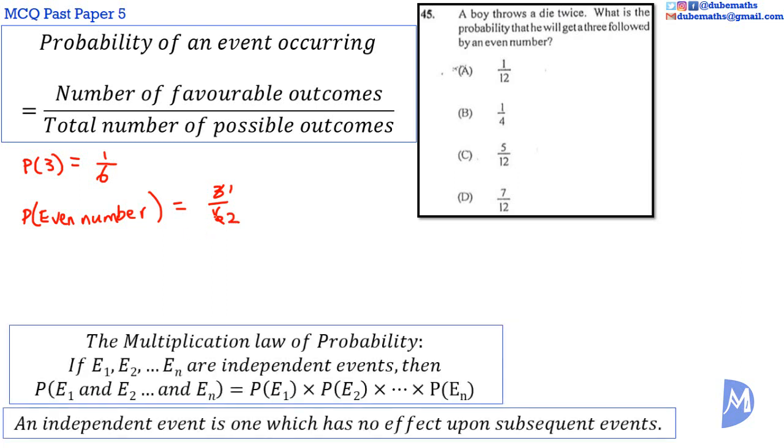The multiplication law of probability says that if E1, E2 up to EN are independent events, then the probability of E1 and E2 up to EN is equal to the probability of E1 multiplied by E2 multiplied by up to EN. An independent event is one which has no effect upon subsequent events. Each throw of a die is an independent event. What you roll on one die has no effect on the result of the next roll.